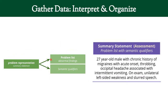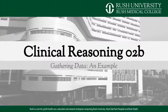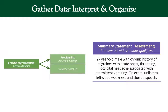When you're done — usually at the end when you've collected history, physical, and your initial data — you're going to synthesize all of that into a summary statement, sometimes called an assessment. That's going to be a problem list, usually the most important problem with all the semantic qualifiers. For example: 'a 27-year-old male with a chronic history of migraines with acute onset throbbing occipital headache associated with intermittent vomiting; on exam, unilateral left-sided weakness and slurred speech.' That is the end of this video — we're going to go through an example in the next one.